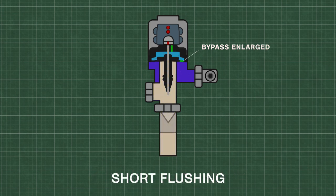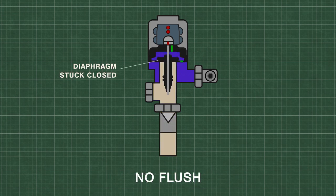If the bypass hole is enlarged, then the upper chamber will fill with water too quickly. Alternatively, if the diaphragm or relief valve is worn down or sticks to the valve, it can prevent the unit from even functioning at all.